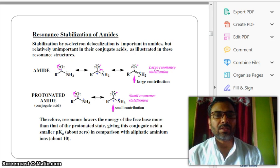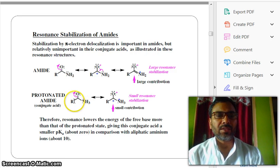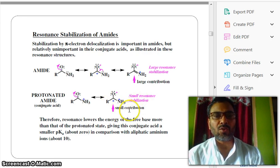Now, take another example, the protonated amide conjugate acid. Look at here, you can see RCO-NH3 with a positive charge. Now, a small resonance stabilization, a small contribution.